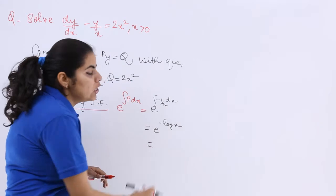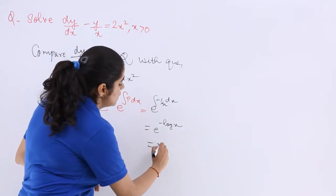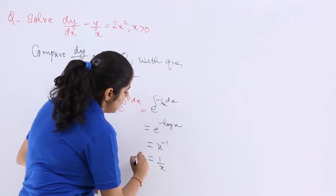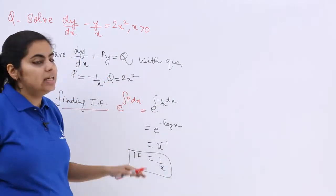Now e and log should cancel. So let's take minus sign to the power. So it is x raised to the power minus 1 or it is 1/x as the IF. Now this is the integrating factor.